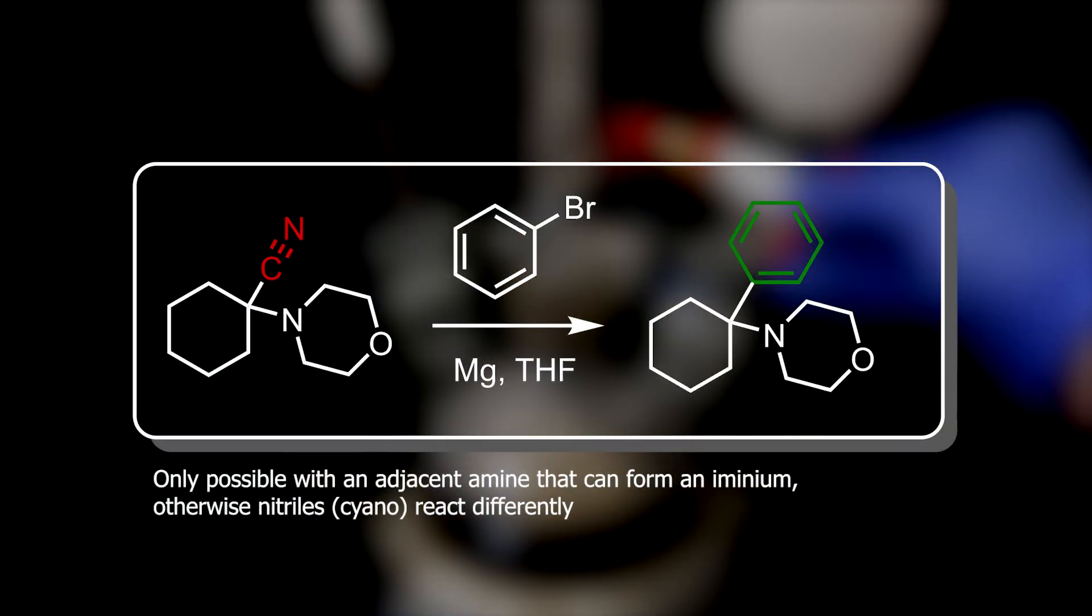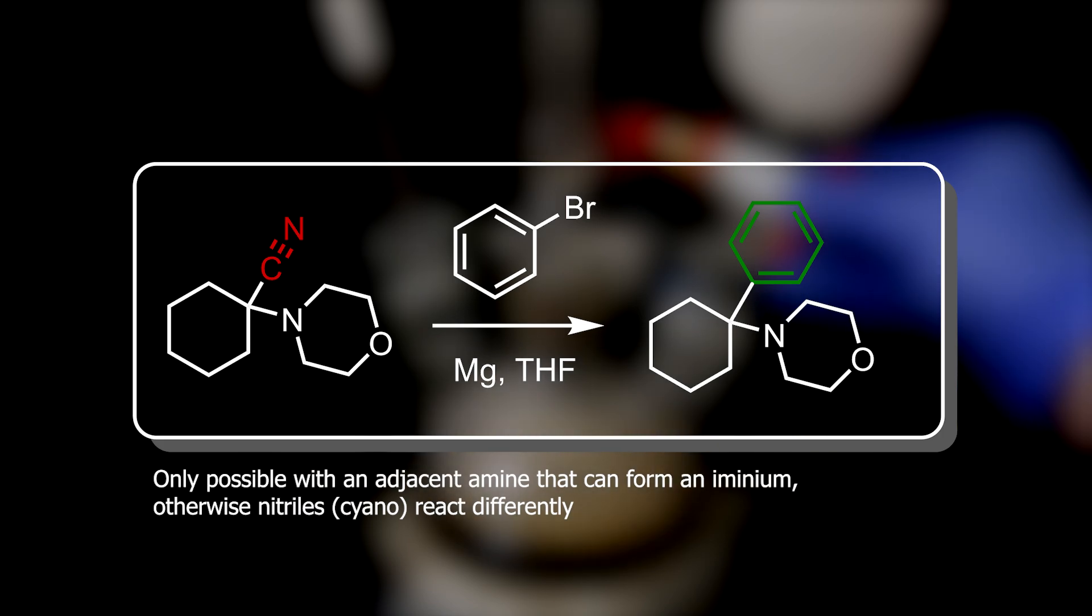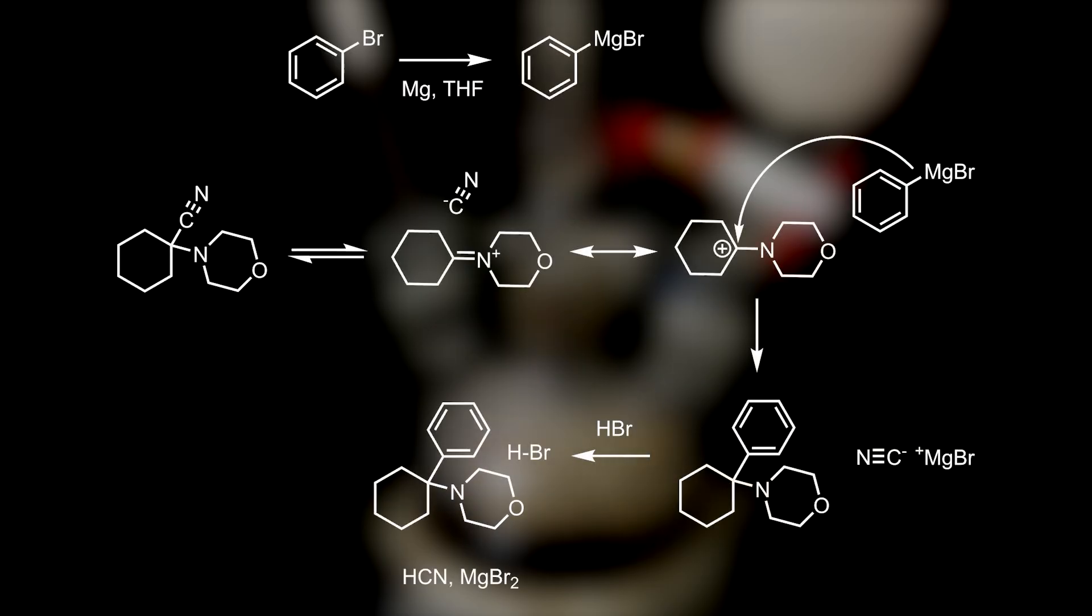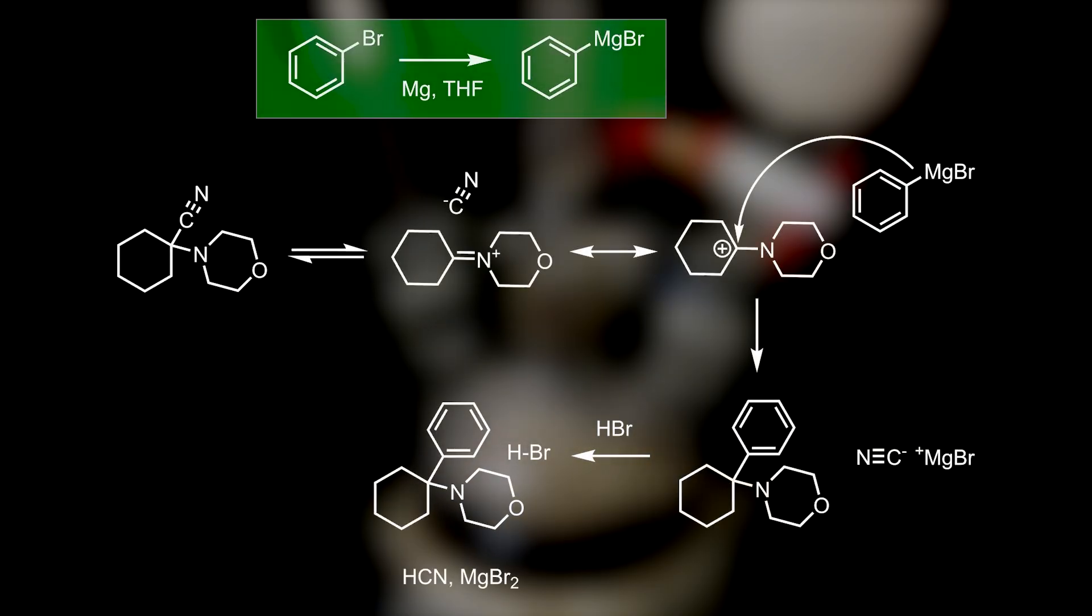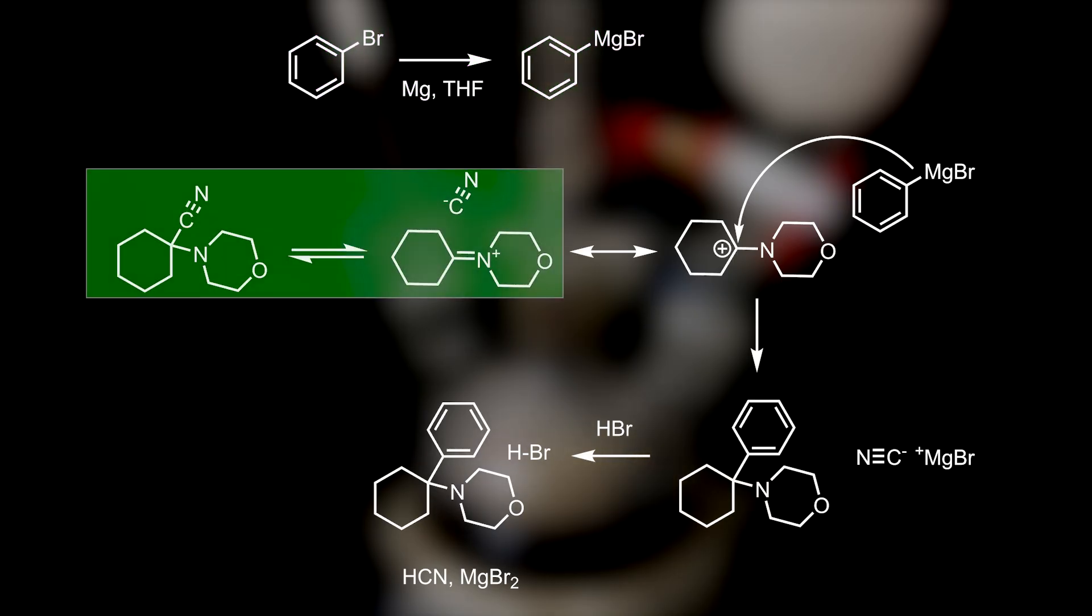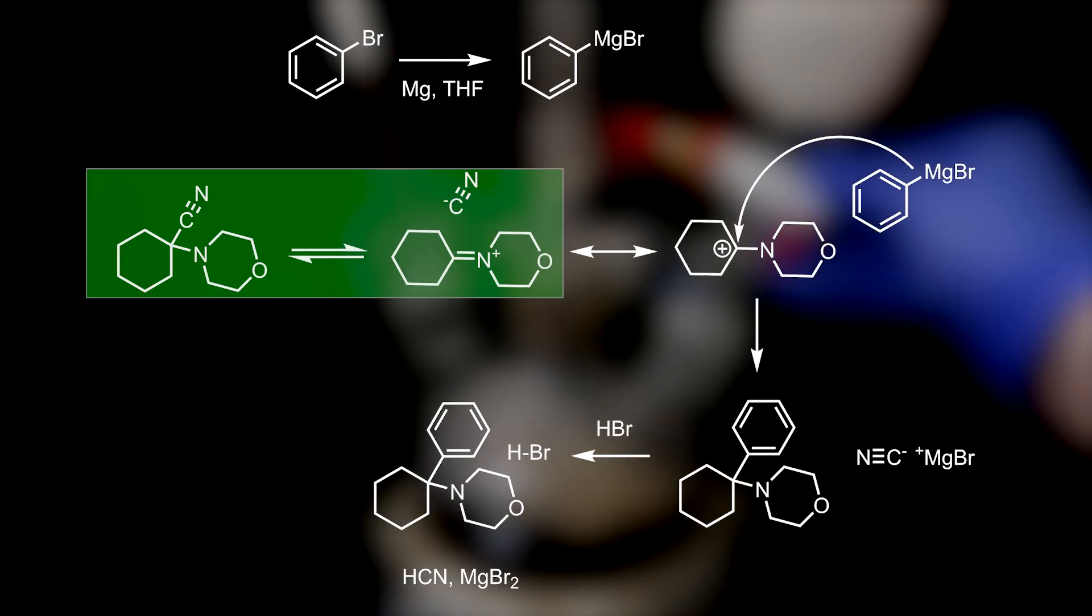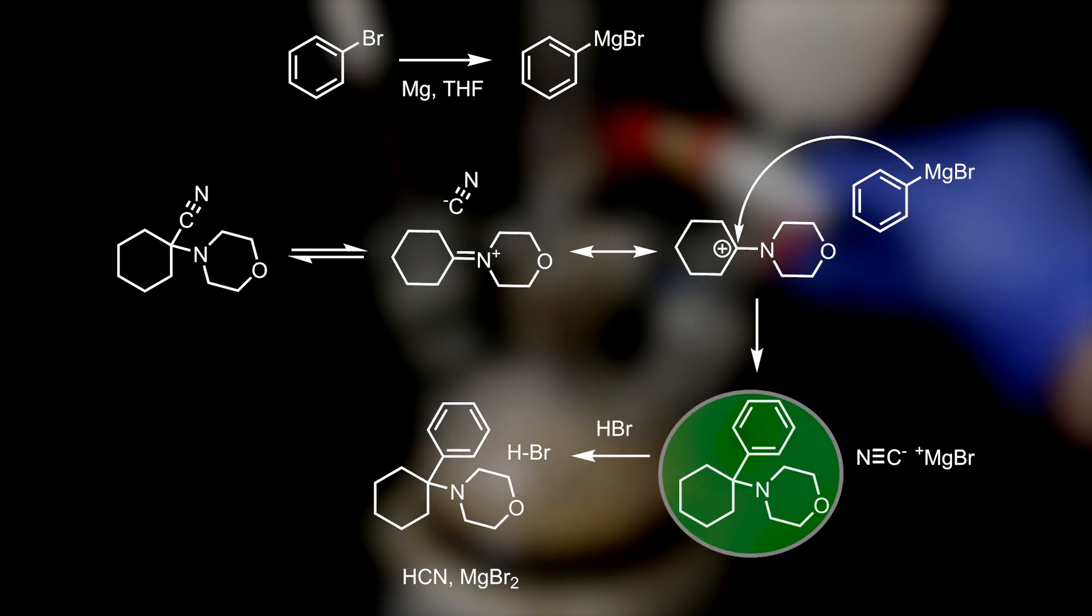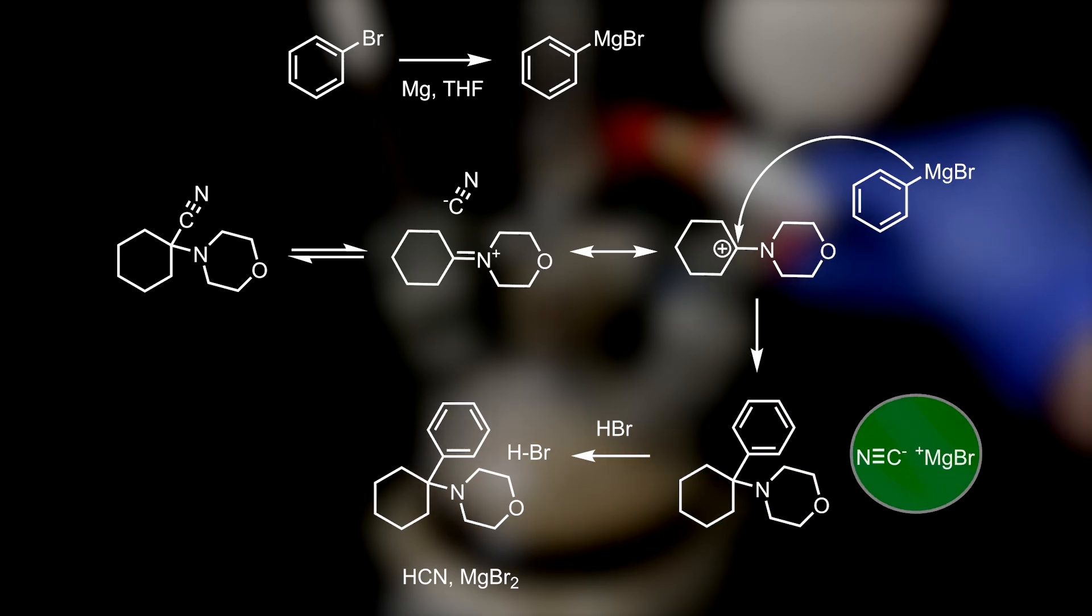In this reaction, we can react this cyano compound with a Grignard reagent like phenylmagnesium bromide, to remove the cyano group and replace it with a phenyl group. We first prepare the Grignard reagent phenylmagnesium bromide, by reacting bromobenzene with magnesium, in an anhydrous ethereal solvent. We then have our cyano compound, which in solution, exists in an equilibrium with this iminium cyanide. Like before, the iminium carbon can be attacked by a nucleophile, in this case the phenylmagnesium bromide, giving the product PCMO and this magnesium bromide cyanide.